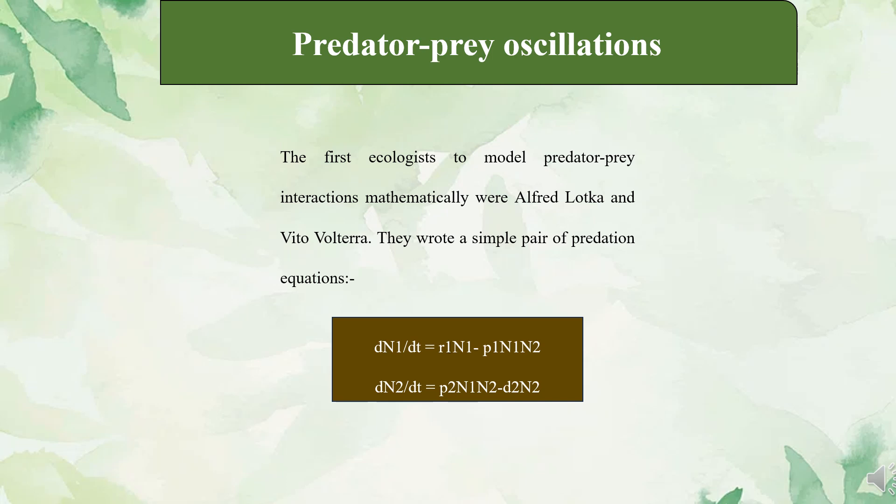Coming to predator-prey oscillations: the first ecologists to model predator-prey interactions mathematically were Alfred Lotka and Vito Volterra. Both researchers built their models based on observations of interactions among natural populations. Lotka was impressed by the reciprocal oscillations of populations of moth and butterfly larvae and the parasitoids that attacked them. Volterra was inspired by the response of marine fish populations to the cessation of fishing during World War I. Volterra observed that the response of these populations was uneven — predacious fish, particularly sharks, increased in abundance while the populations upon which they fed decreased.